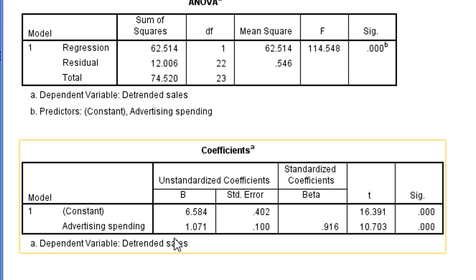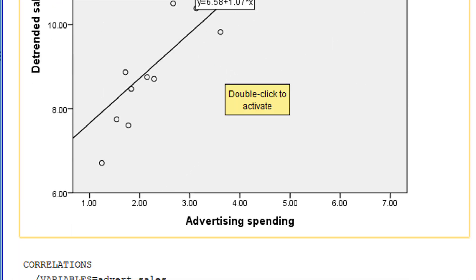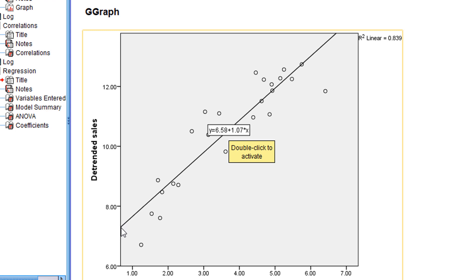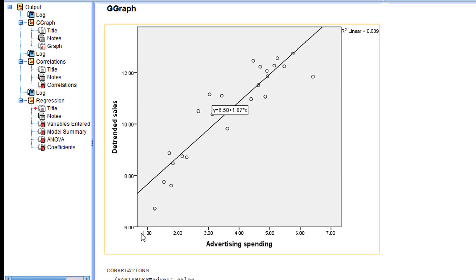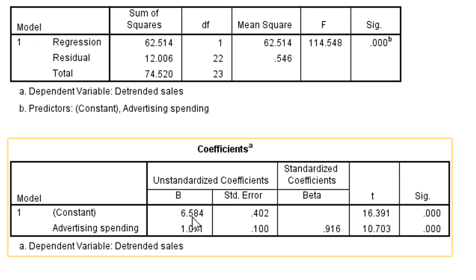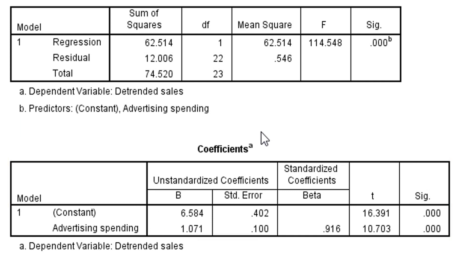The coefficients table confirms that this particular relationship exists. The constant is the y-intercept. The y-intercept means that if there is no independent variable — if there is no advertising — then sales would still equal 6.584. So this is an excellent example of a relationship testified by the scatter plot, by correlation, and by regression as well.